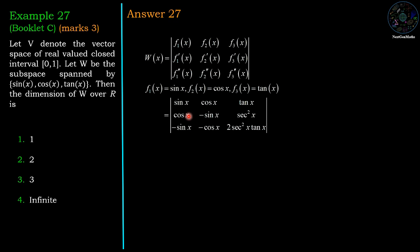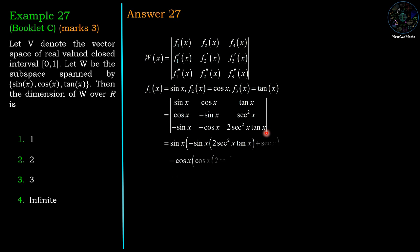The derivative of sin x is cos x, and the derivative of cos x is −sin x. In the second column, the derivative of cos x is −sin x, and its derivative is −cos x. For the third column, the derivative of tan x is sec²x, and its derivative is 2 sec²x tan x. Now evaluate the determinant.